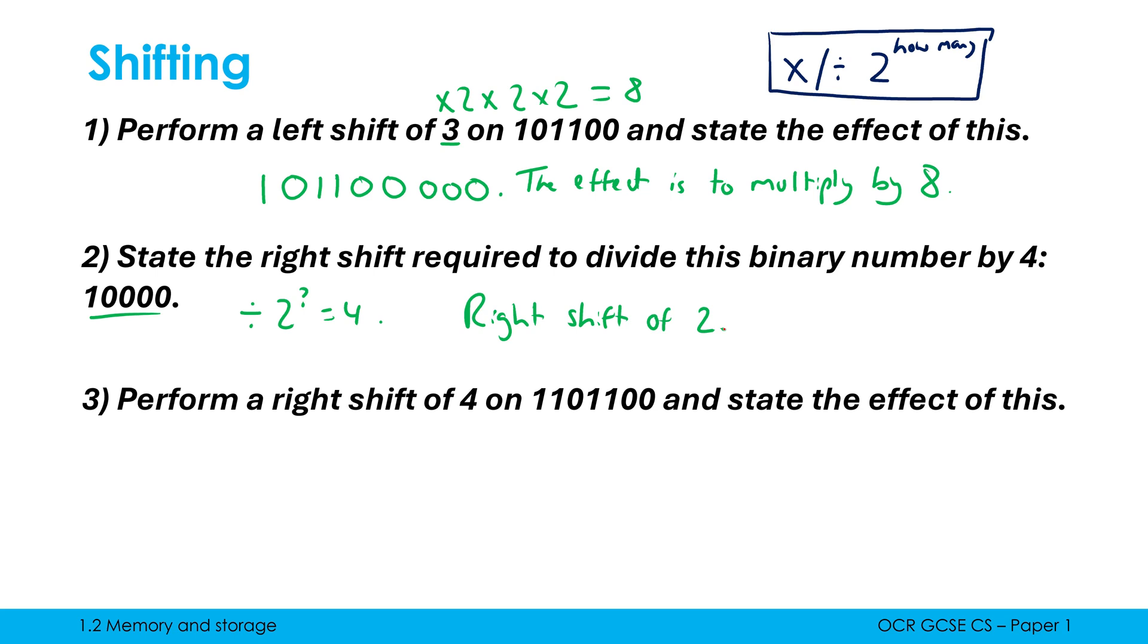Question 3 is performing a right shift of 4 on 1101100. I just cut off four digits on the right hand side. The effect: we're dividing by 2 to the power of 4, which is 16. However, we can't just move on. A right shift isn't as simple as a left shift. We're dividing by 16 but removing the fractional part. Don't forget to add that whenever you're talking about right shifts.